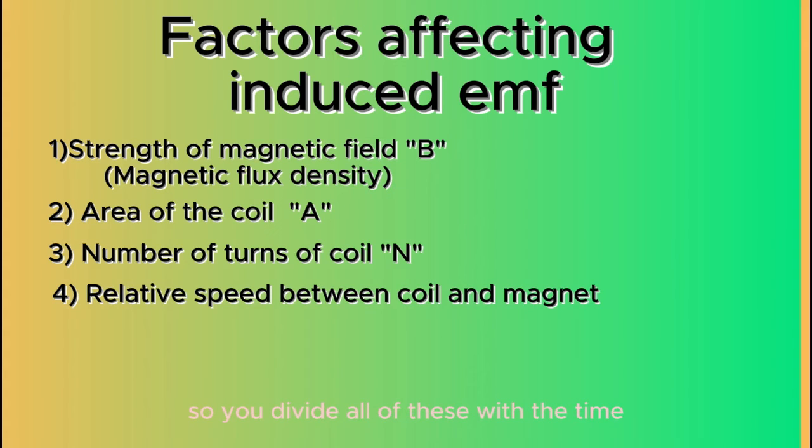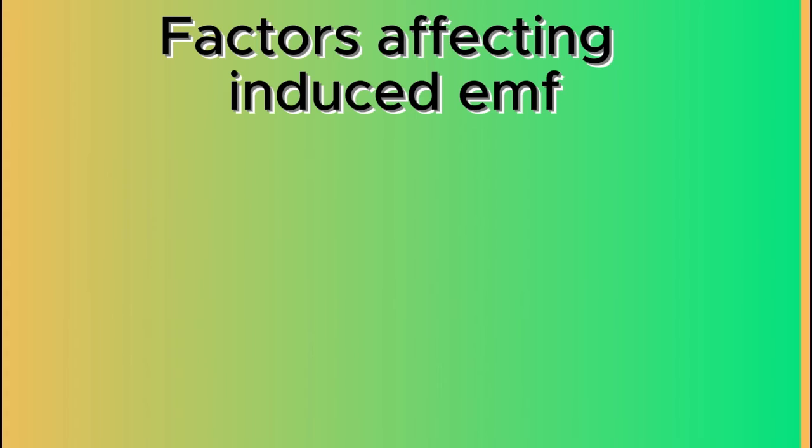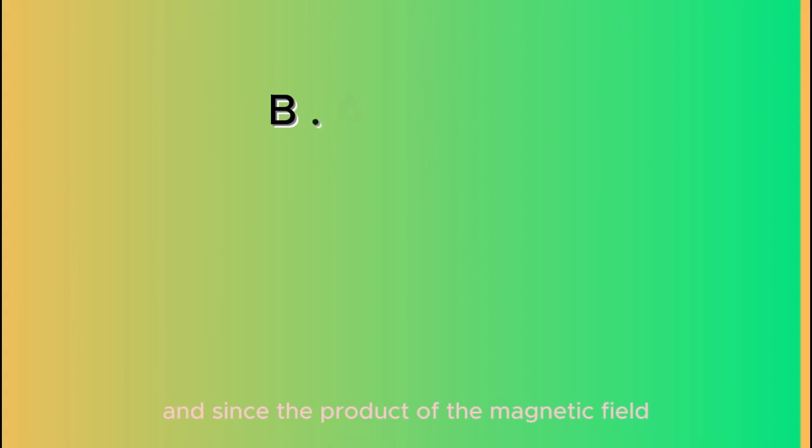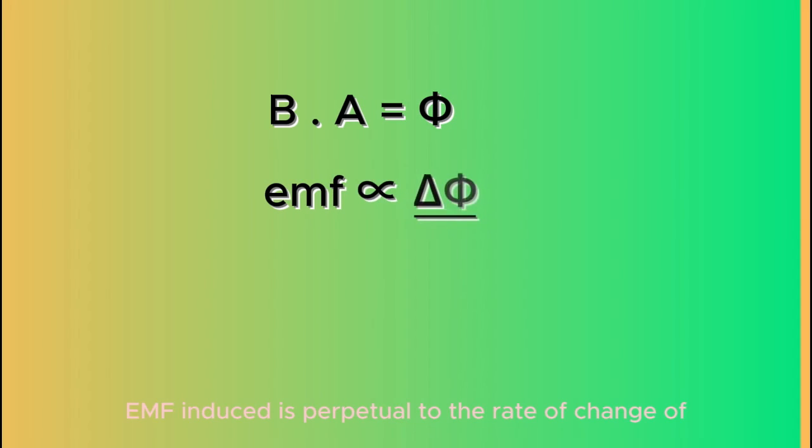And since the product of the magnetic field strength B and area A is the magnetic flux, hence, mathematically, EMF induced is proportional to the rate of change of magnetic flux.